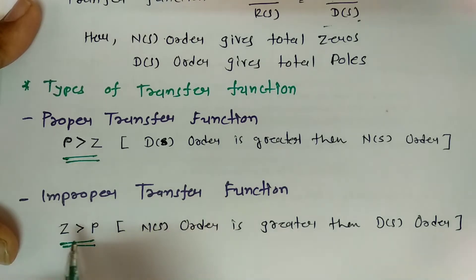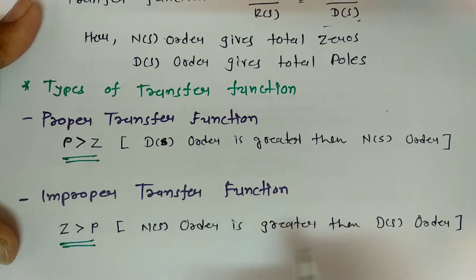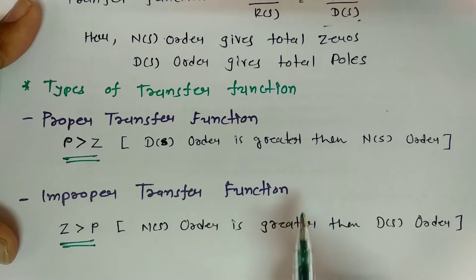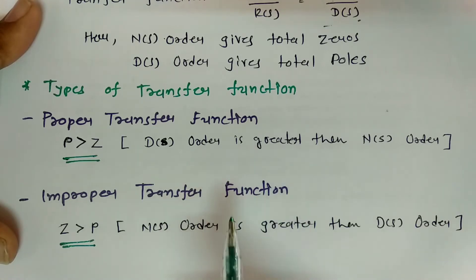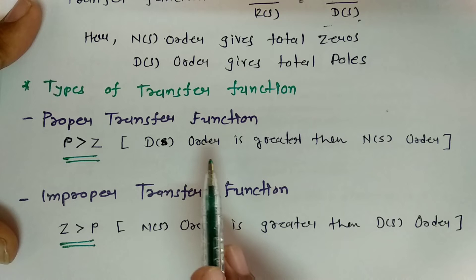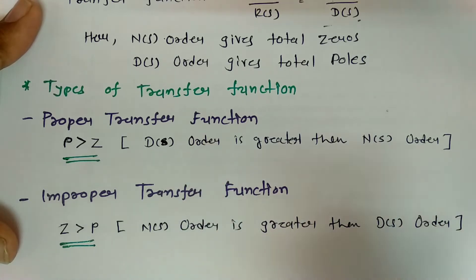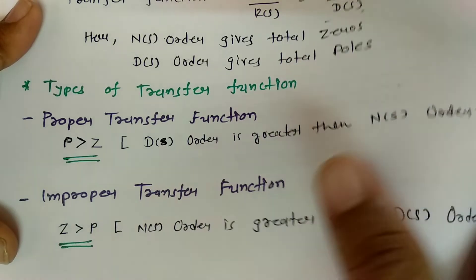For an improper transfer function, zeros are greater than poles — that is, the order of the numerator polynomial is greater than the order of the denominator polynomial. So transfer functions are classified into proper (more poles) and improper (more zeros).